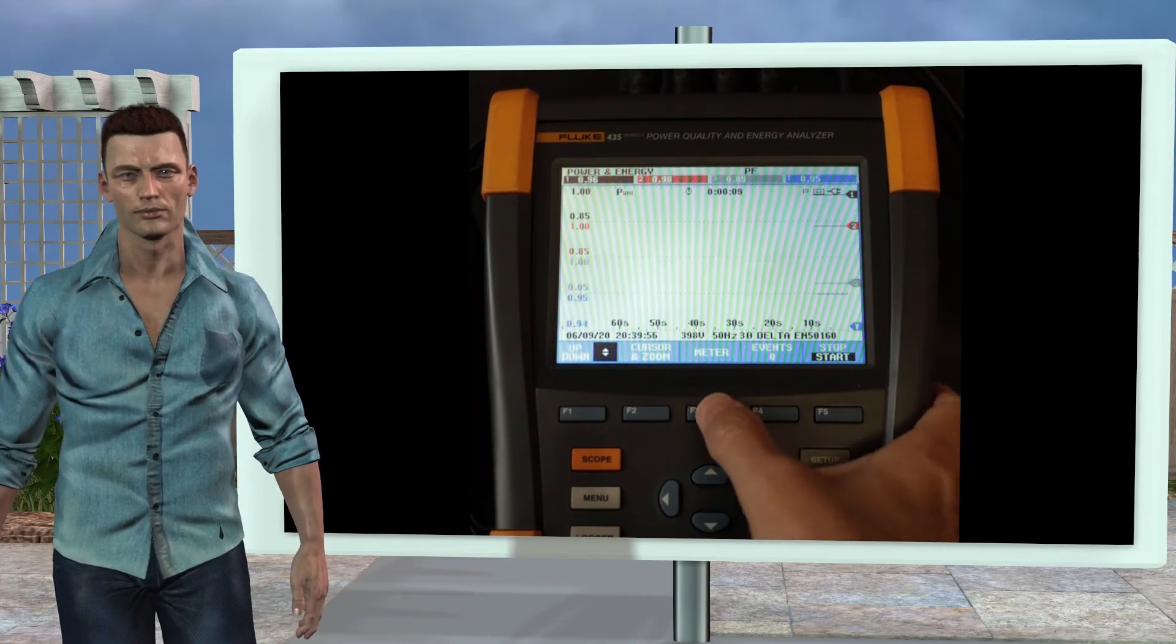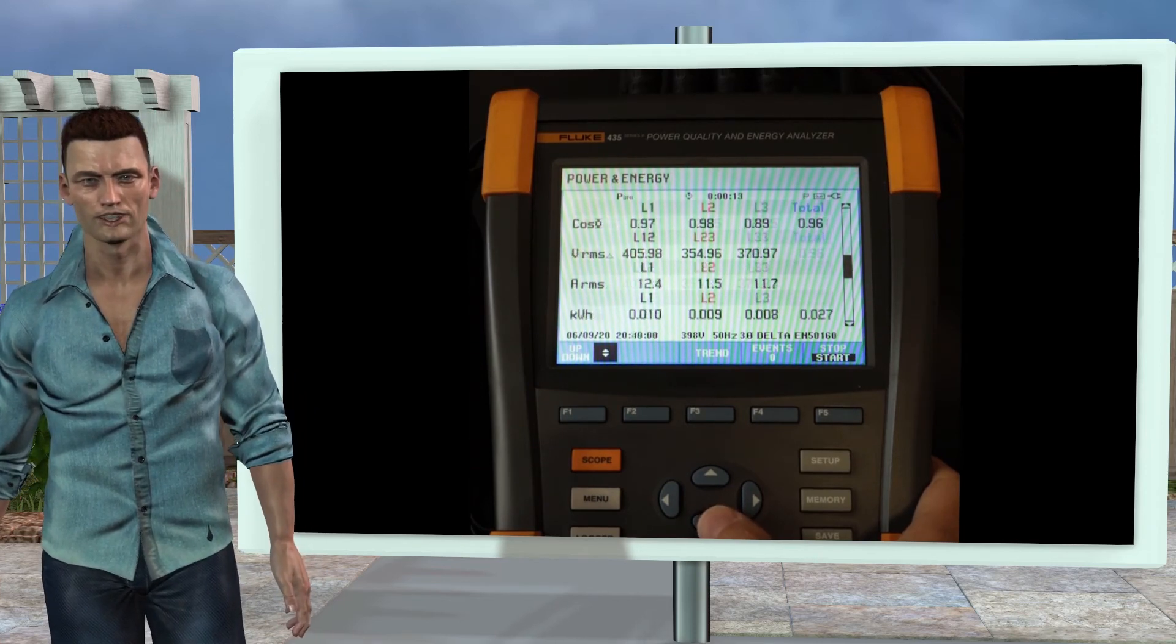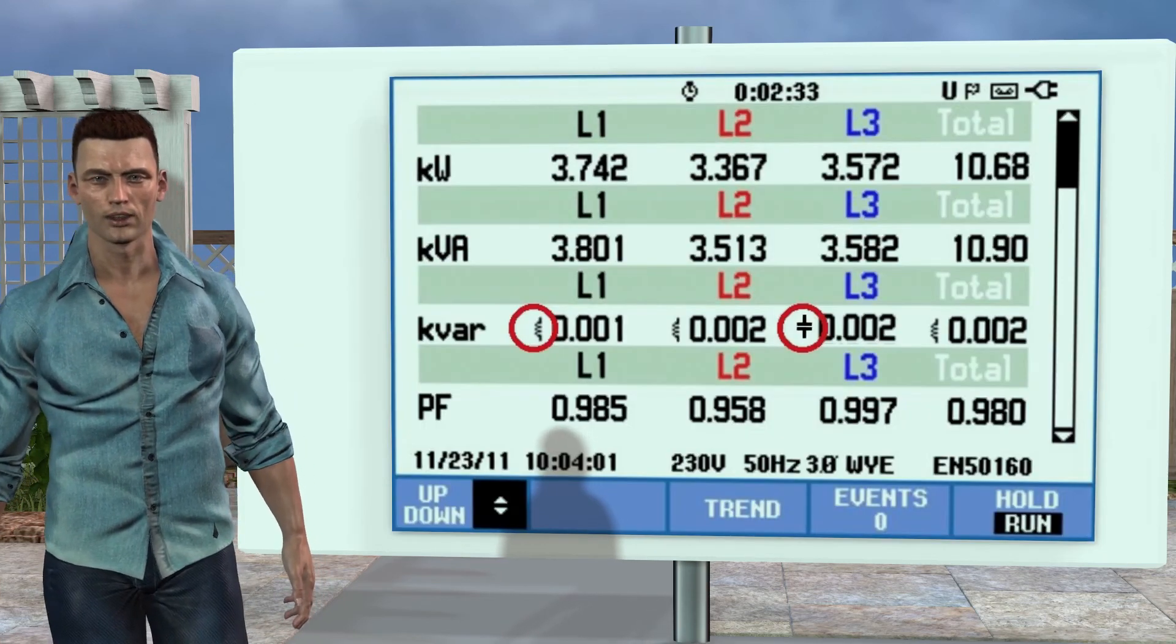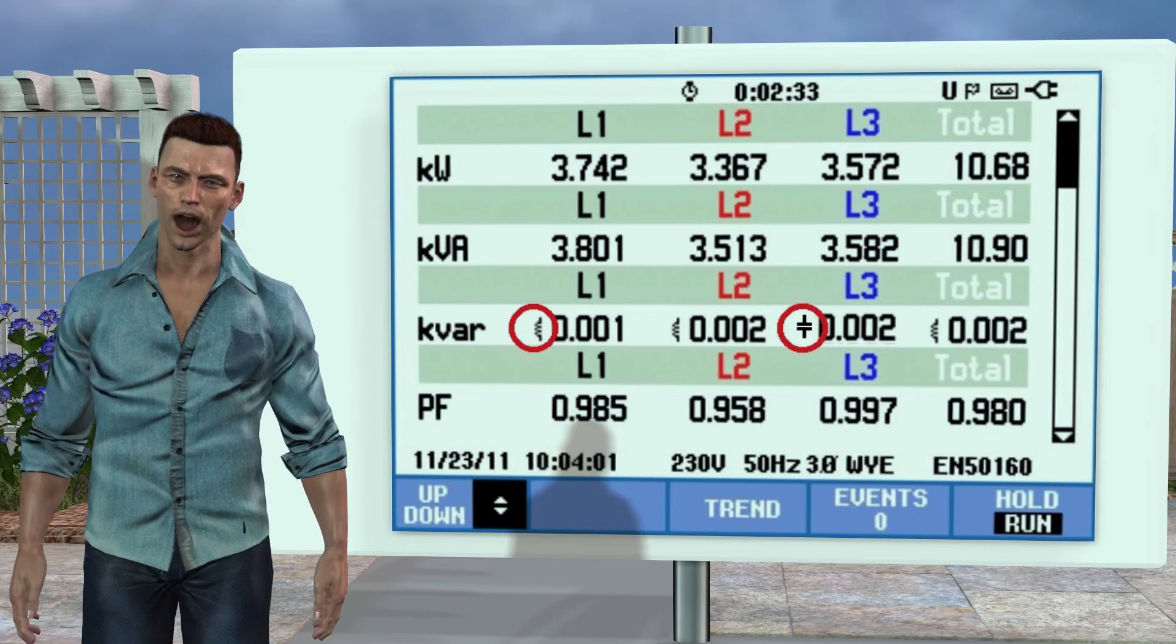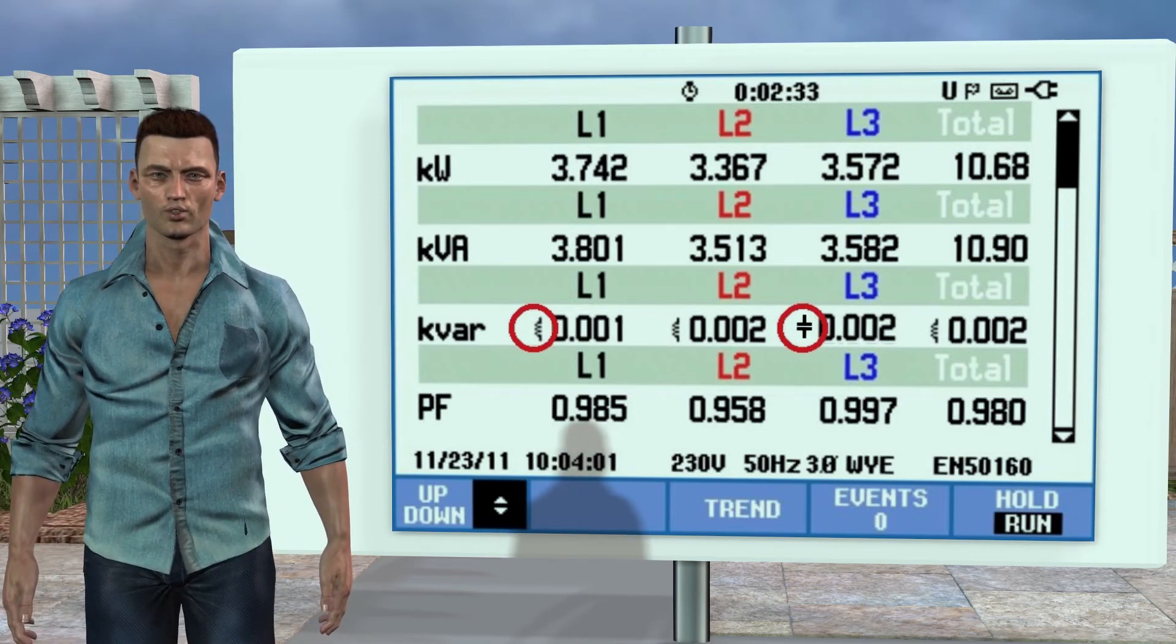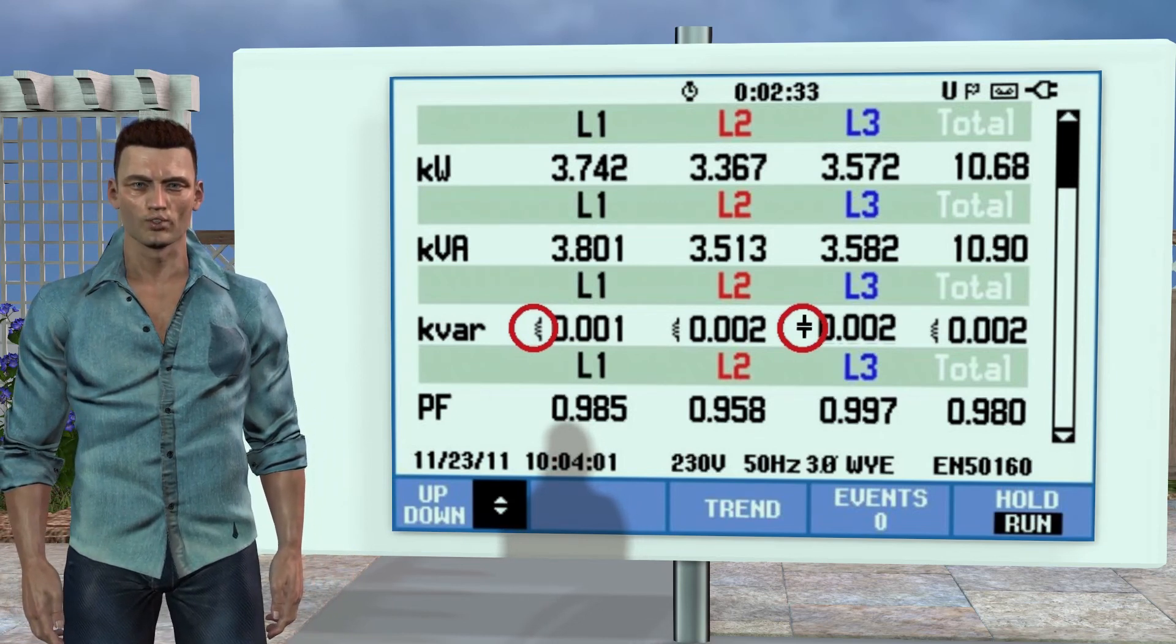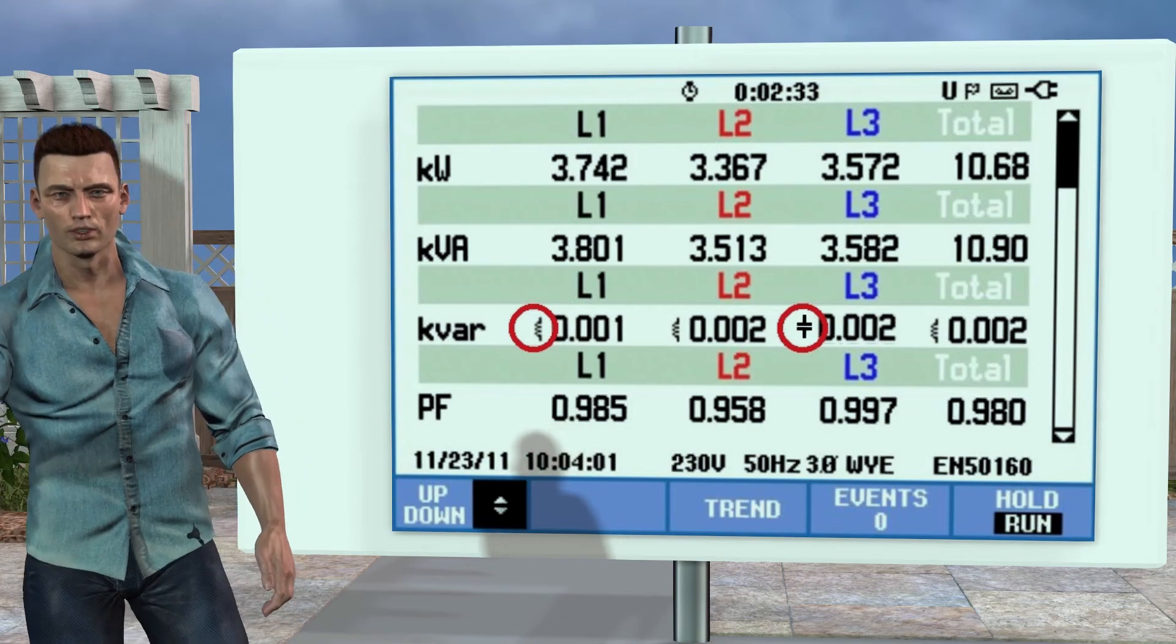As I have already indicated, reactive power appears on inductive circuits, but also on capacitive circuits, and, in order to be aware of what type of reactive power we have, the Fluke 435 provides, for each phase, an icon or symbol, of a capacitor, or a coil, if the installation is capacitive or inductive, respectively.